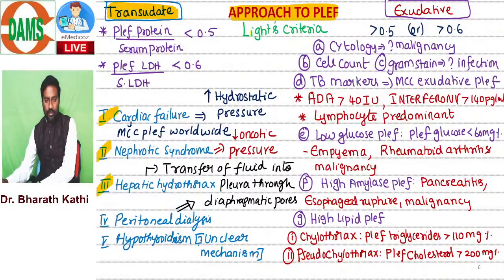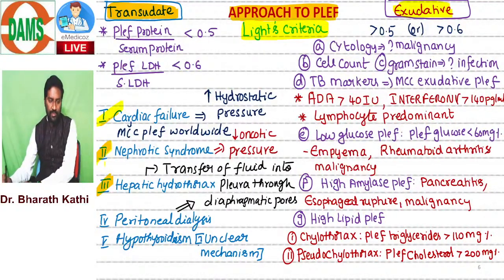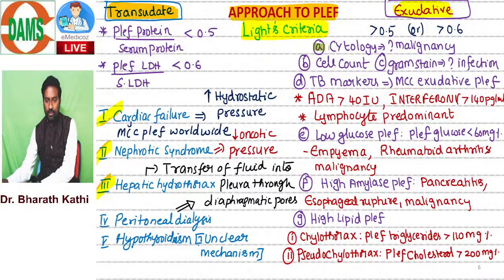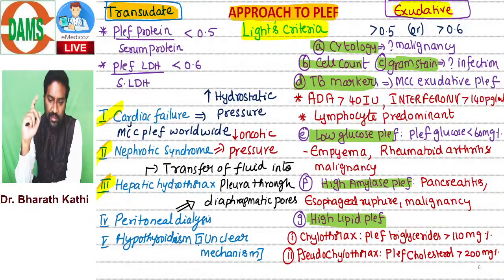This is the approach to pleural effusion - a very important table in clinical practice. According to Light's criteria, determine whether it is transudate or exudate. If transudate, think about cardiac failure, nephrotic syndrome, or hepatic hydrothorax. If exudate, evaluate for malignancy via cytology, cell count for infection type, gram staining to rule out infection, and TB markers to rule out tuberculosis. Also assess low glucose, high amylase, and high lipid to determine the etiology.